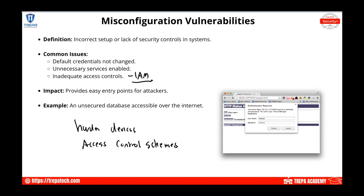Another misconfiguration example is leaving an unsecured database accessible over the internet. This happens when we don't decouple the database from the back end and leave it exposed to front-end users via HTTP requests, instead of developing a proper API endpoint for the database.